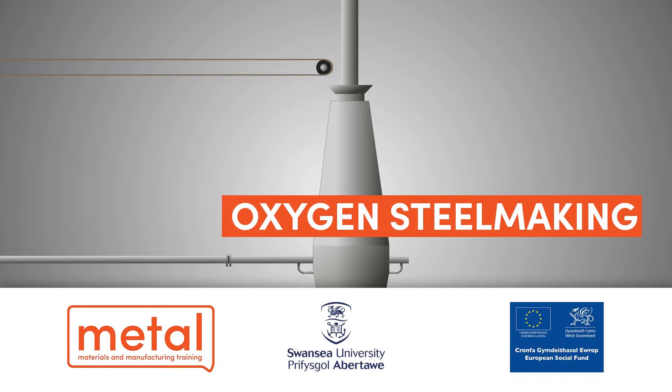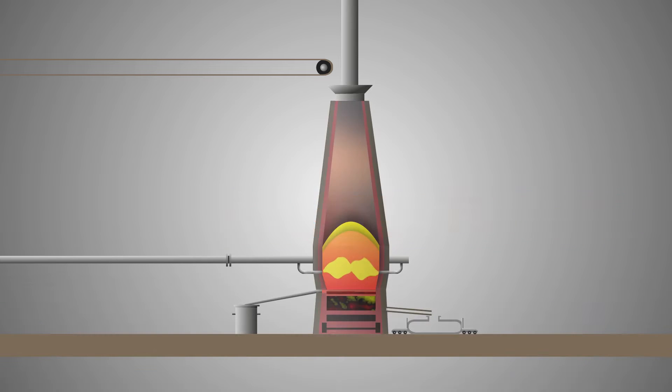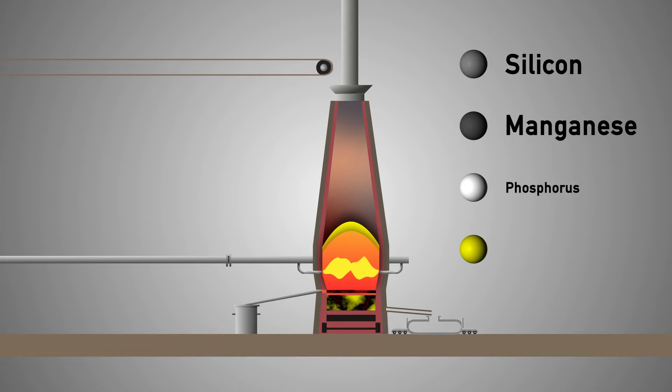In oxygen steelmaking, molten iron is refined to steel by removing carbon and impurities, most notably silicon, manganese, phosphorus, and sulfur, by controlled oxidation.